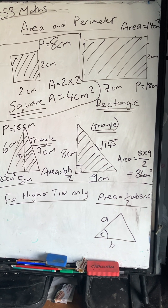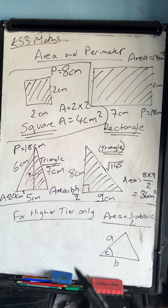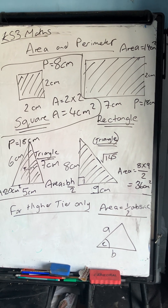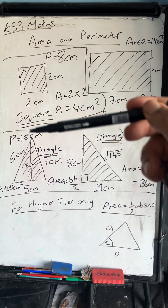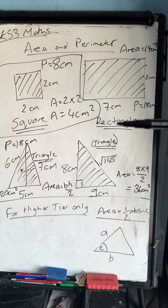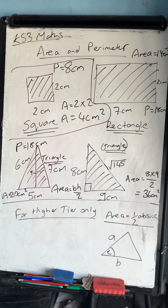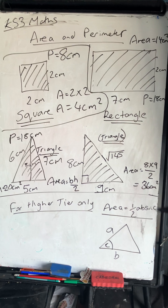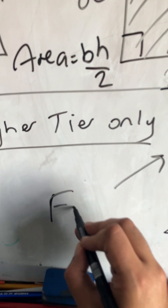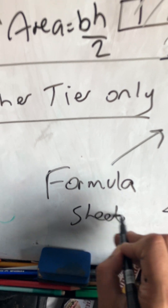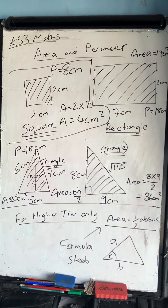Any questions or queries about area and perimeter, put them in the comments below. I'll try to do a separate video on circles — area and perimeter of circles. Make sure you're happy with the formulas for the area and perimeter of a square, rectangle, and triangle. For higher tier, the ½ab sin C formula is actually given to you on the formula sheet, so you don't need to worry too much about memorising it.